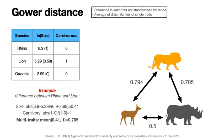In trait-based ecology, species differences are generally estimated using the Gower distance, which is very well suited for mixed-type variables, as in this case. The dissimilarities are computed for each trait in a standardized way, and then an average dissimilarity is computed across traits. The standardization is obtained by dividing trait differences by the range of such differences. In this way, the differences are, for each trait, standardized between 0 (no difference) and 1 (maximum difference), and then they can be averaged. Applying this approach, we see that the lion is the most different, unique species among the three, and that the rhino and the gazelle are the most similar ones.